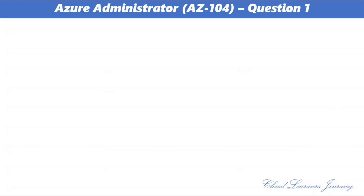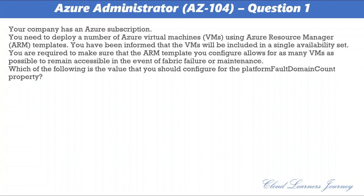Question number 1. Your company has an Azure subscription. You need to deploy a number of Azure virtual machines using Azure Resource Manager ARM templates. You have been informed that the VMs will be included in a single availability set. You are required to make sure that the ARM template you configure allows for as many VMs as possible to remain accessible in the event of fabric failure or maintenance. Which of the following is the value that you should configure for the platform fault domain count property? The options are: a) 10, b) 30, c) minimum value, d) maximum value.